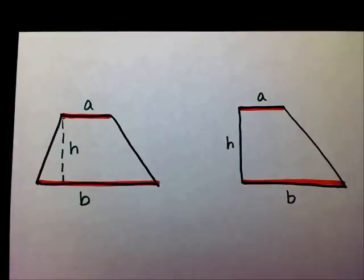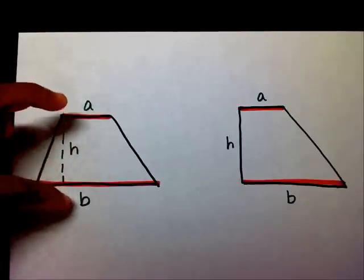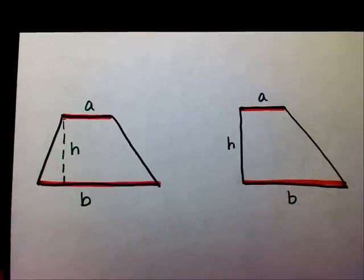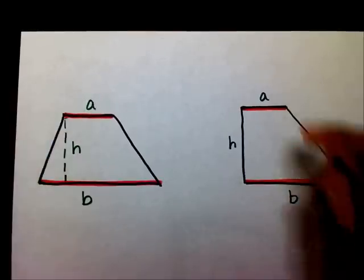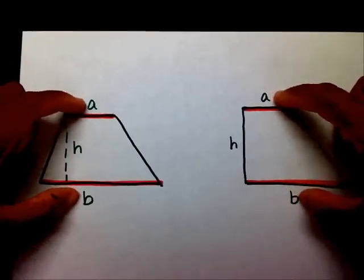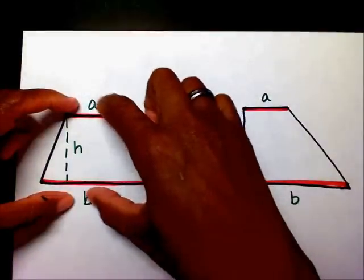And also, if you notice, we assign some variables to each line. Well, the two pair of parallel lines, they're assigned an a and a b, and an a and a b. It really doesn't matter which ones you label as a and b, as long as the two are labeled a and b.